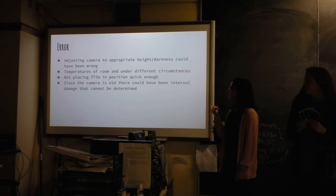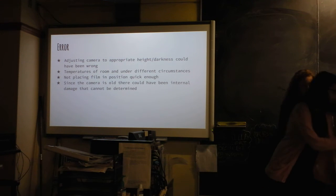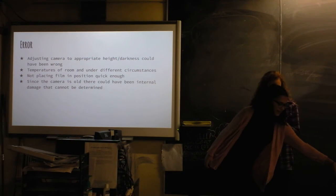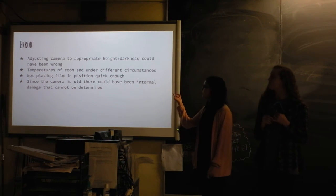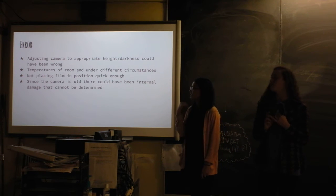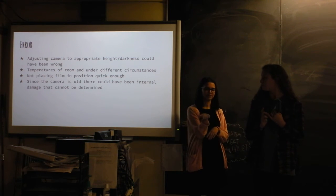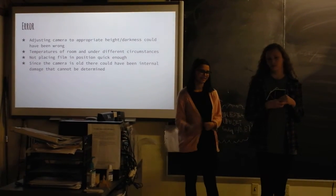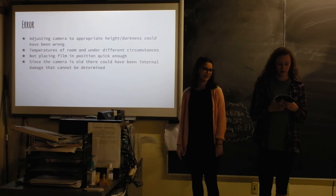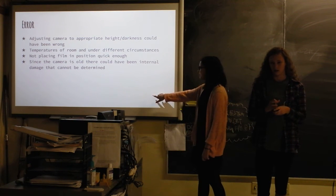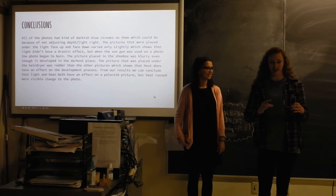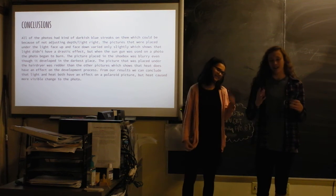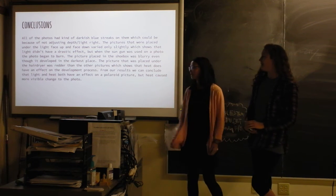Okay. So, the error was adjusting the camera. So, the camera has these distance and light little things, I guess, sensors. And we might have adjusted those wrong. Or the temperatures of the room and under different circumstances, not placing the film in position quick enough. So, it was exposed to too much light at first. And then the camera is old. So, there could be stuff going on in the camera that we don't really know about and can be hard to determine. And you have to hold it super still. So, it could be possible that we moved it or at least, I'm not saying that, but it could be a little bit shaky. So, that could make it blurry.